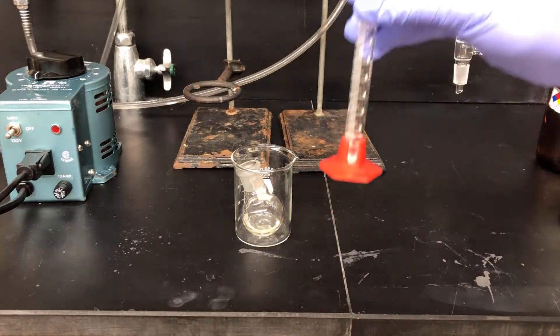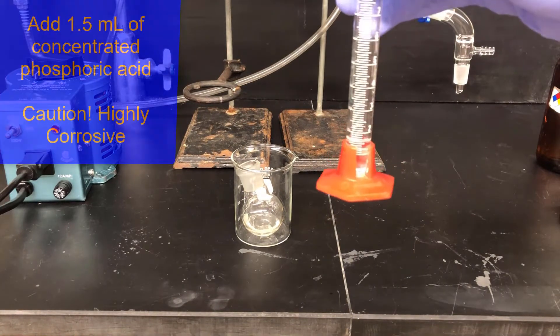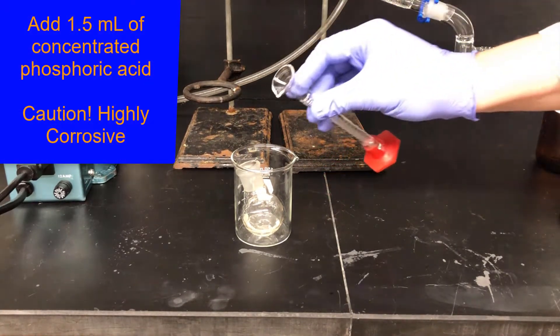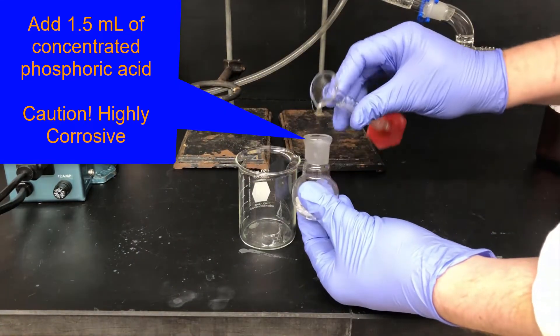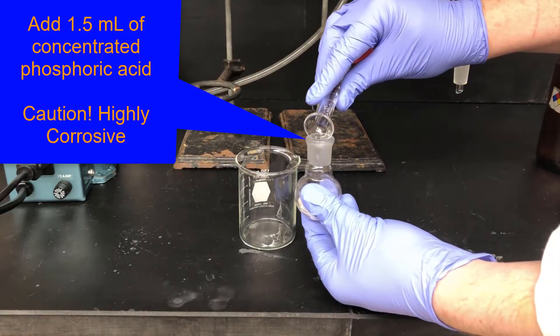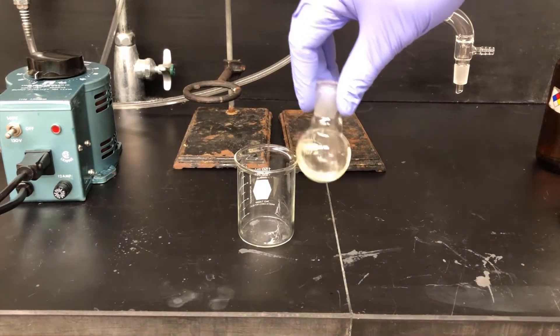Next, we'll add the catalyst, which is concentrated phosphoric acid. Concentrated phosphoric acid is very corrosive. You'll need to make sure that you're careful with this reagent. Wear gloves and avoid skin contact. Add 1.5 milliliters of phosphoric acid. Once the reagents have been added, swirl the flask a little bit, and then we'll hook it up to a distillation apparatus.